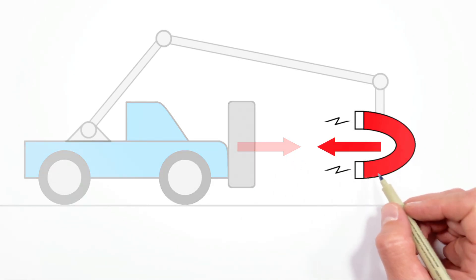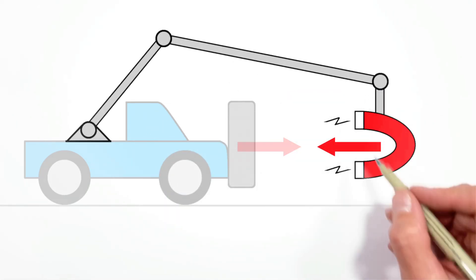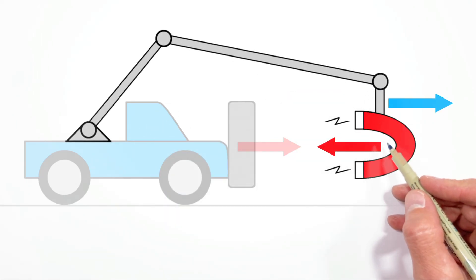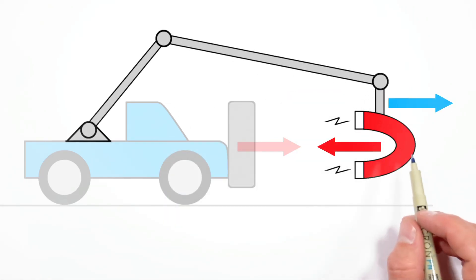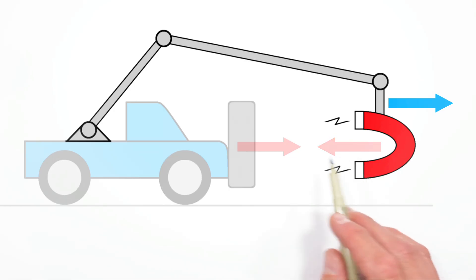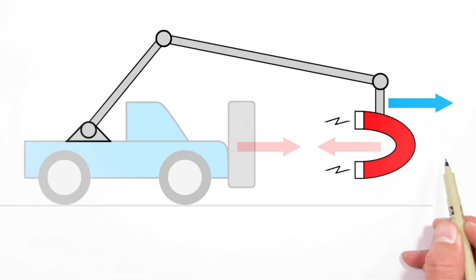That means the beam is going to have to be acting forward on the magnet. And again, that's where Newton's Third Law pops up. If the beam is pushing forward on the magnet, that means the magnet is pushing backwards on the beam.